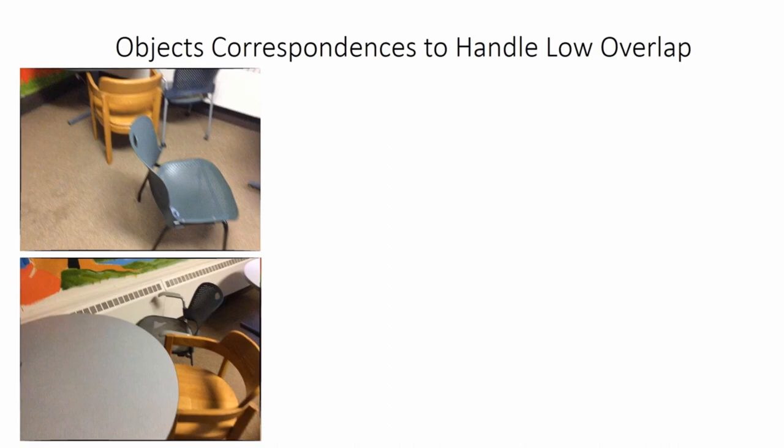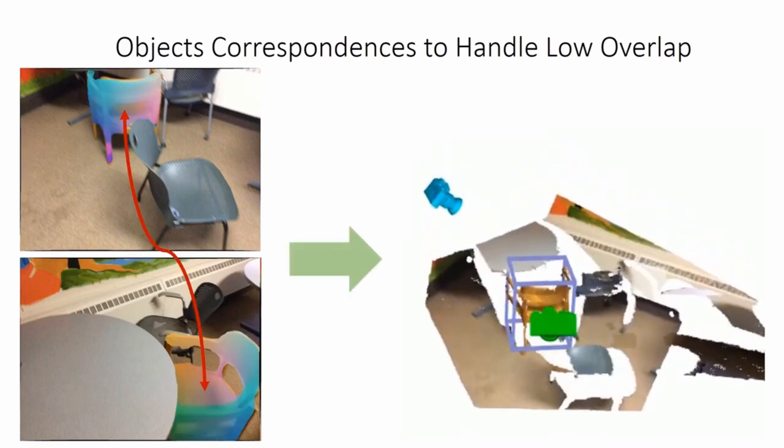We instead observe that registration can nonetheless be achieved by leveraging indirect correspondences over semantically matching frames. For instance, for this chair seen from both the back and from the side. Using indirect correspondences over the semantically matching chair, our method can still estimate the camera poses.